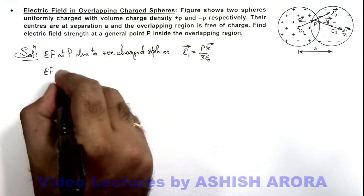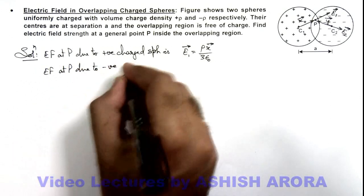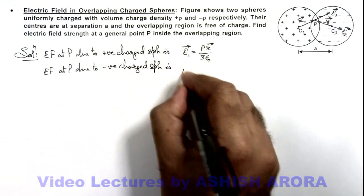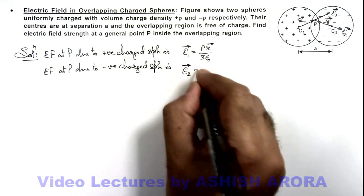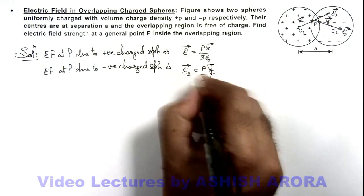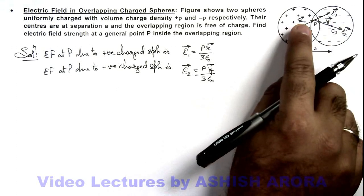So we write electric field at P due to this negatively charged sphere. This you can write as E₂ vector which is given as ρ y vector by 3ε₀ with a negative sign because the direction of E₂ vector is opposite to this y vector.